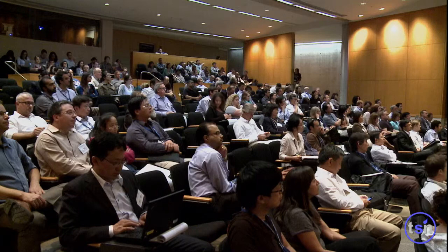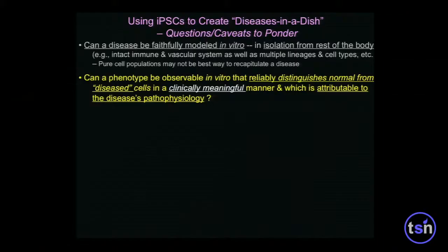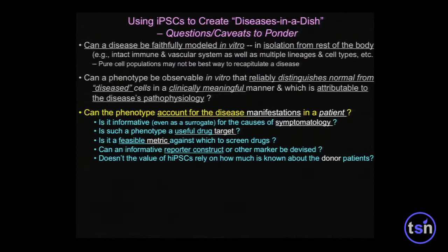The first is: can you really model a disease in isolation of the rest of the body — an intact vascular system, an intact immune system, in isolation of all the other lineages that interact with a particular cell? When you do find a difference between a diseased cell and a normal cell, can you find a difference that's clinically meaningful? In other words, can it account for the symptomatology of the actual patient?